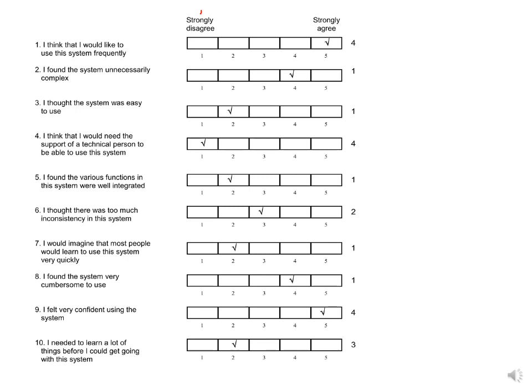For each of the 10 questions, the odd questions are positive and the even questions are negative. For odd questions, we subtract 1 from the user value: user value minus 1. For even questions, the formula is 5 minus the user value.